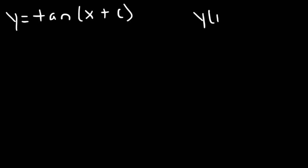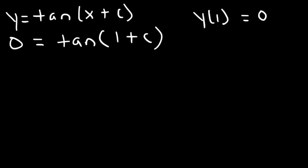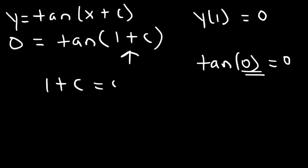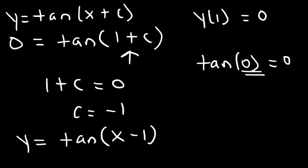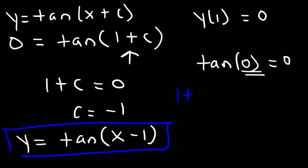We were given the initial condition y of 1 is equal to 0. So let's replace y with 0 and x with 1 and solve for c. Tangent of what angle is equal to 0? Tangent of 0 is equal to 0, and tangent of pi is equal to 0 as well, but let's use this one. Therefore, 1 plus c has to be equal to 0, which means that c is equal to negative 1. So one of the particular solutions is y is equal to tangent(x minus 1). You could also set 1 plus c equal to pi, 2pi, 3pi, and it keeps going — but here is one particular solution.